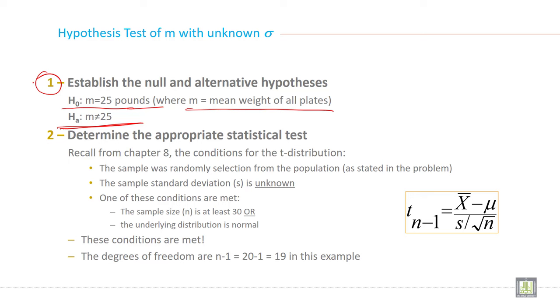The second step: determine the appropriate statistical test. The clue to determine the appropriate statistical test has already been given in the previous slide. Recall from the previous slide: the sample was randomly selected from the population, the sample standard deviation is unknown, and sample size is less than 30. These conditions are met.